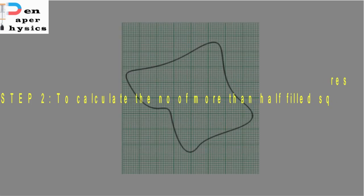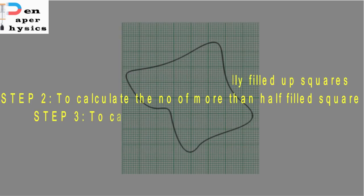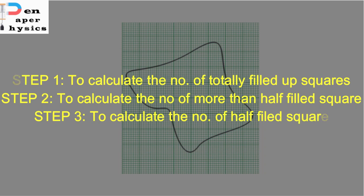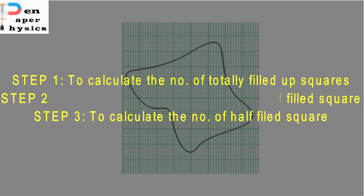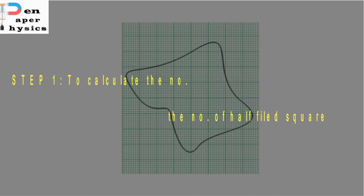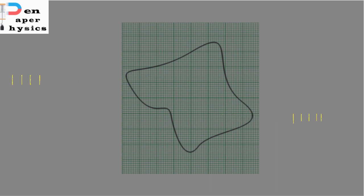If you want to find the surface area of an irregular surface, you have to follow 3 steps. Step 1: count the number of completely filled squares inside the surface. Step 2: count the number of squares more than half filled. Step 3: count the number of half filled squares. Remember, squares which are less than half filled are eliminated — we won't count them. Now I will show you the method to do it.